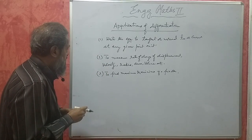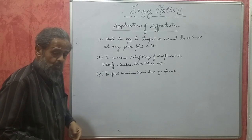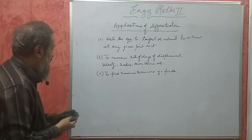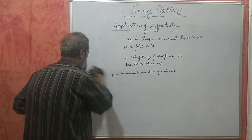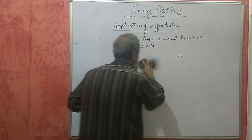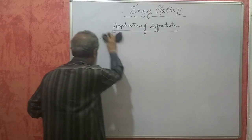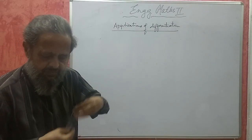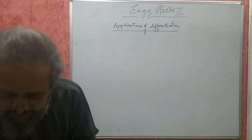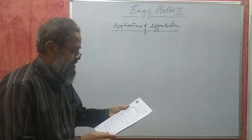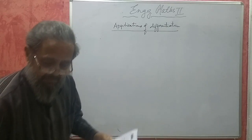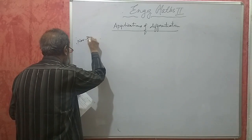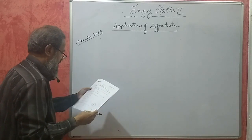We get problems on using this. When we do those problems we will understand what it is. Now first let us take one by one these things. We will solve some problems and understand how to use this. In this you get about 14 marks. We will take up some problems. See, November-December 2017 paper, section A, 7th problem for 3 marks.